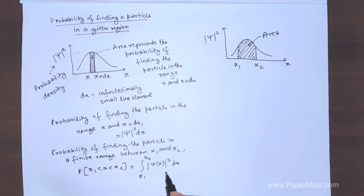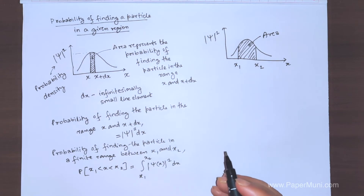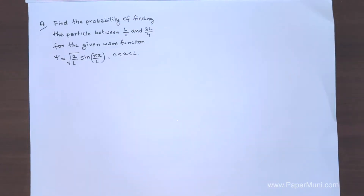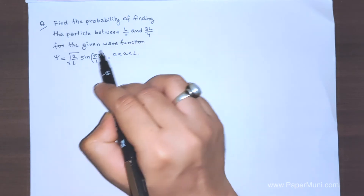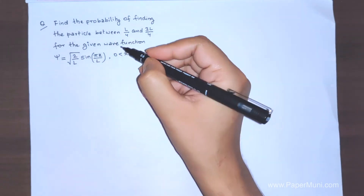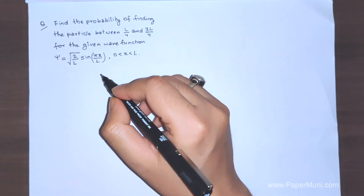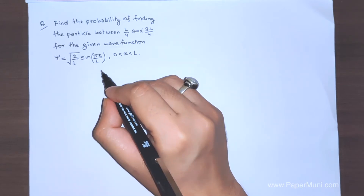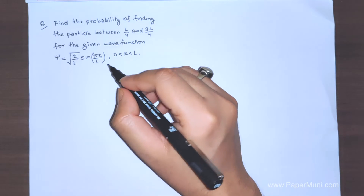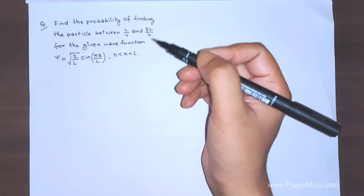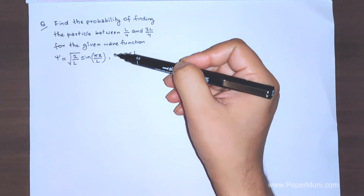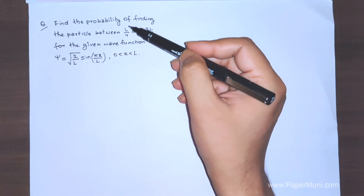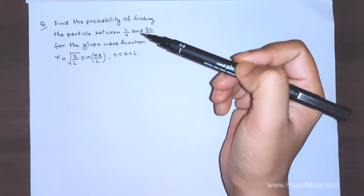You can apply this concept to various problems. Let's discuss a problem. Find the probability of finding the particle between L/4 and 3L/4 for the given wave function. The wave function given is the ground state wave function for a 1D potential well of length L. The wave function is non-zero between 0 and L, and we want the probability of finding the particle between L/4 and 3L/4.